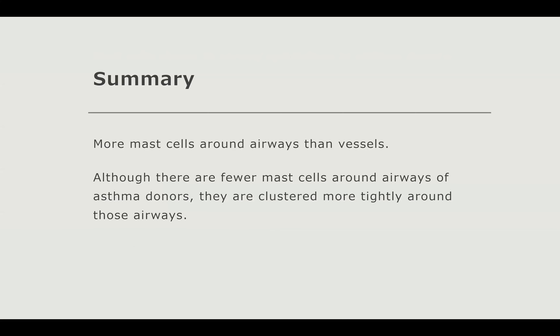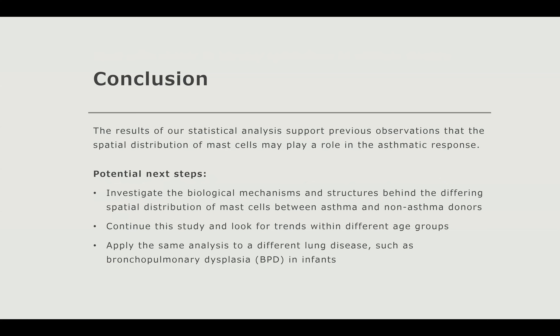To summarize: there are more mast cells around airways than vessels, and although there are fewer mast cells around the airways of asthma donors, they are clustered more tightly around those airways. The results of our statistical analysis do support previous observations that the spatial distribution of mast cells plays a role in the asthmatic response. Potential next steps would be to investigate the biological mechanisms behind why these differences are occurring — why are there fewer mast cells around asthma donors? — or to continue by looking for trends within different age groups, or applying the same analysis to a different lung disease such as bronchopulmonary dysplasia (BPD) in infants.